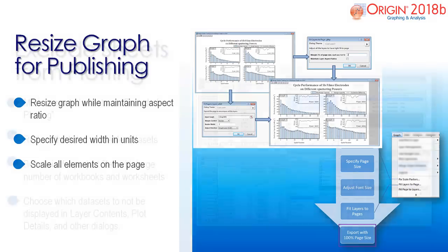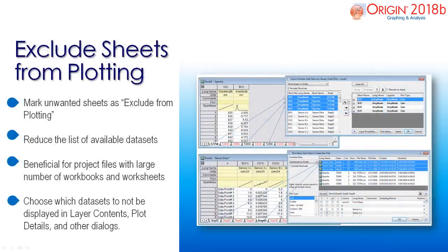In Origin 2018B, within layer contents and plot setup, you can now mark unwanted sheets to exclude from plotting. This reduces the list of available datasets in the dialog, which is specifically beneficial for project files that contain a large number of workbooks and worksheets.